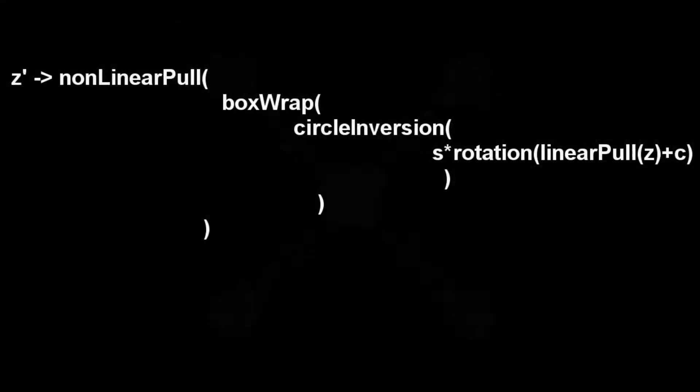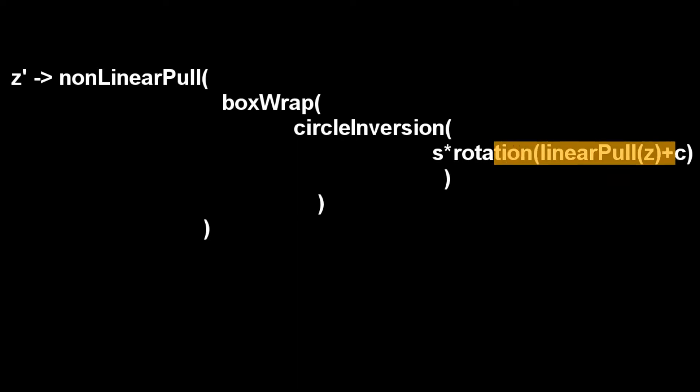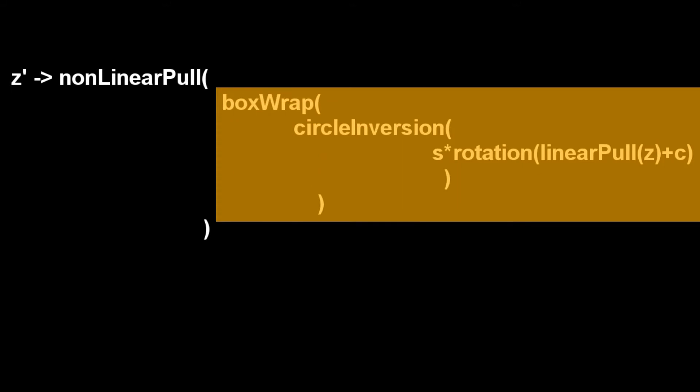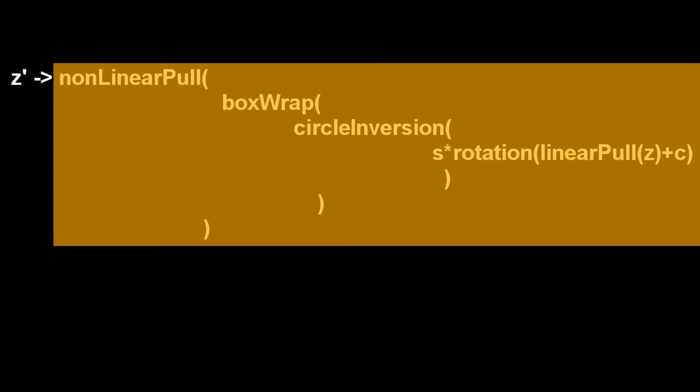This is what the Mandel X formula produces. The formula is made up of consecutive transformations: linear pull, rotation, scale, circle inversion, box wrap, and non-linear pull.